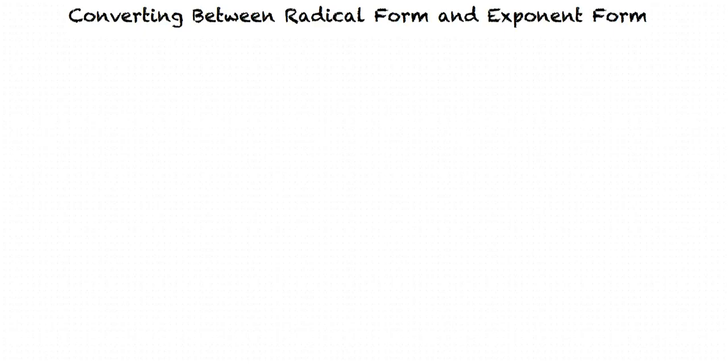This video will cover the topic: Converting Between Radical Form and Exponent Form. Let's start with the square root of 17. The square root symbol indicates the same operation as raising 17 to the power of 1 half.